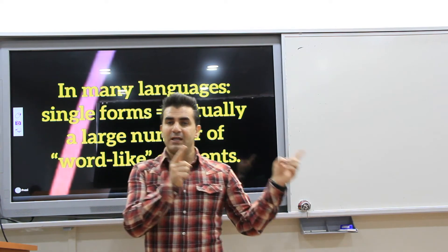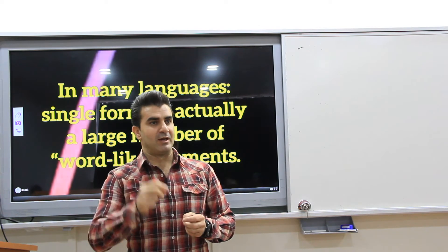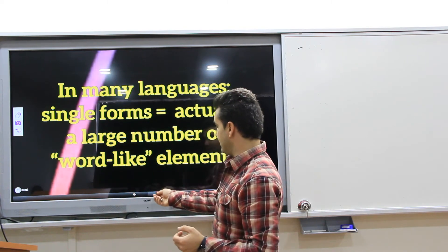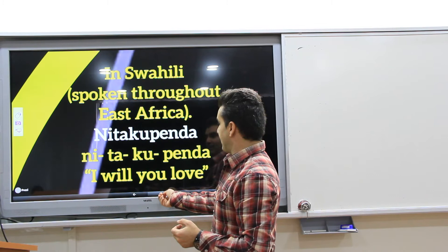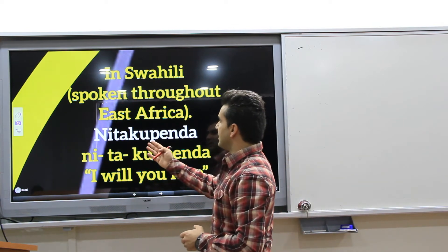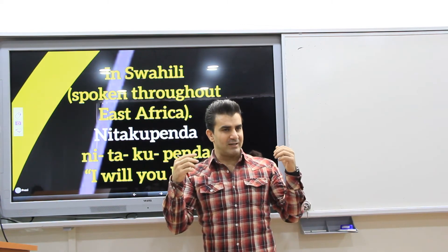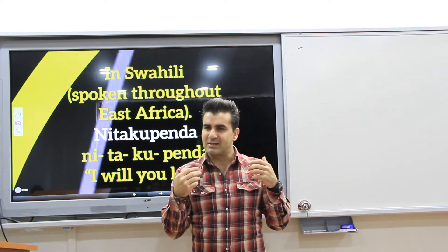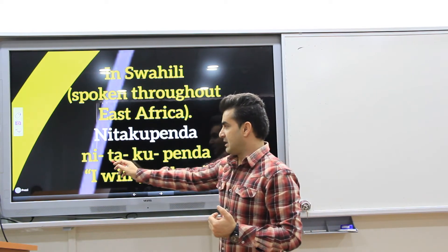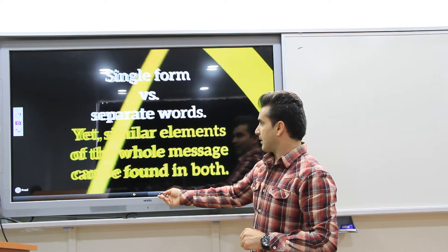However, in some other languages, one form, word-like form, indeed, has the meaning of different forms that are used in other languages. For example, here, in Swahili, that is a language spoken throughout East Africa, nitakupenda. It seems as a single form, right? But indeed, it has basic elements that are used in other languages, like I love you, as jete hazlik, ben seni seviyorum, ya tibya lyublyu, nitakupenda, I will love you.